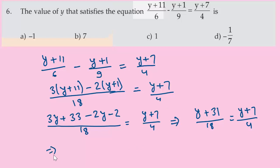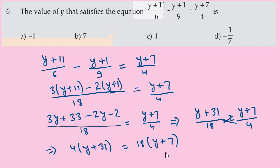Cross multiplying: 4 times (y+31) equals 18 times (y+7), so 4y plus 124 equals 18y plus 126.